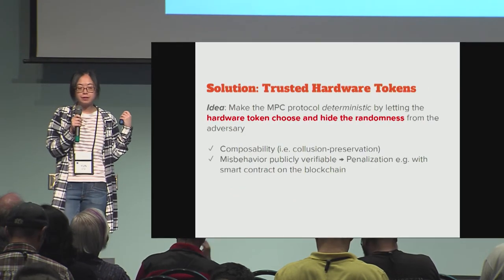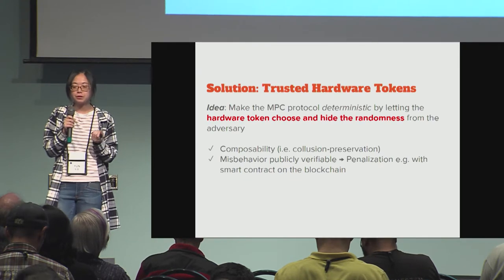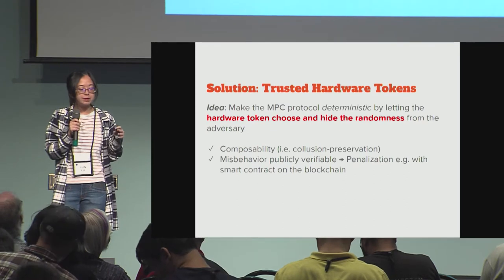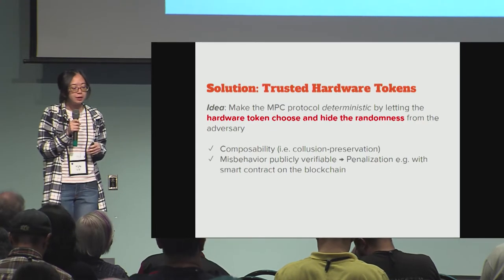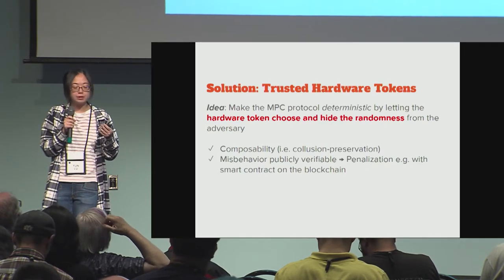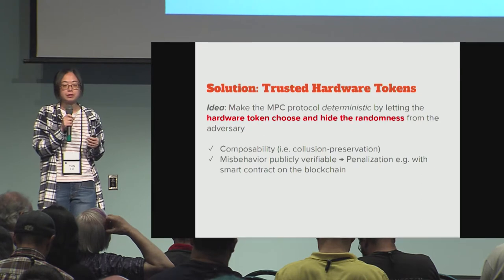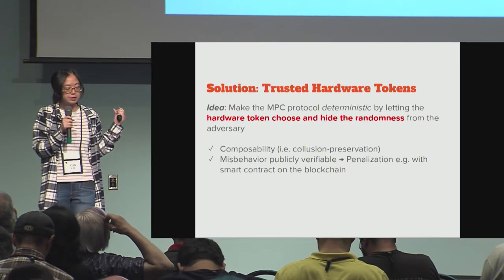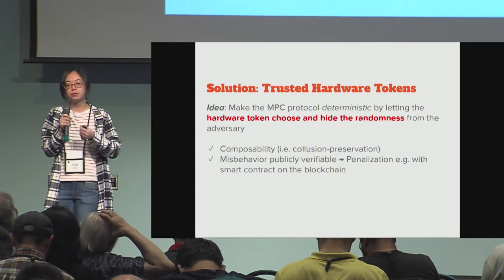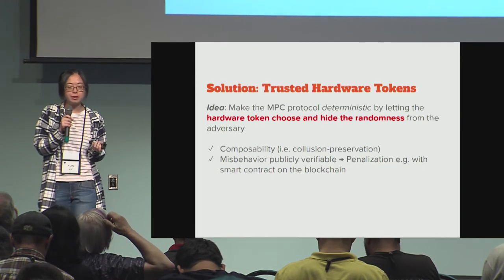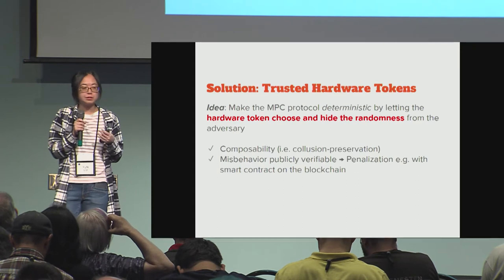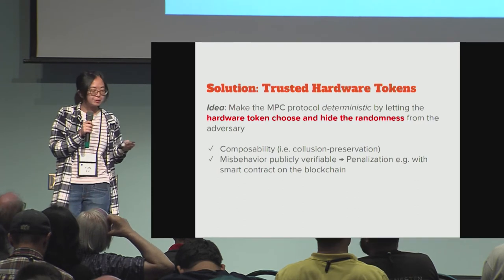We replace the physical envelope with hardware tokens. The idea is to make the MPC protocol deterministic by having the token generate and also hide from the adversary the randomness. What we get from this is composability, and since abort or misbehavior is publicly verifiable, this behavior can be penalized — for example, using smart contracts.